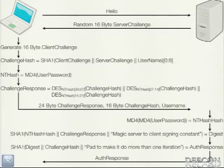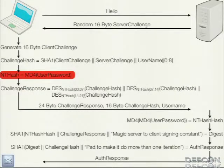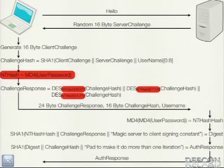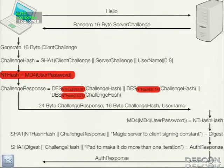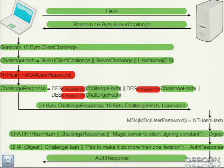If you really look at this and get through all the dazzle, you realize there's actually only one unknown in this entire protocol: the MD4 hash of the user's password. The NT hash is the only unknown thing. That one unknown is used as the three DES keys for the encryption of the challenge hash. Everything else is either sent in the clear or can be derived from something sent in the clear.